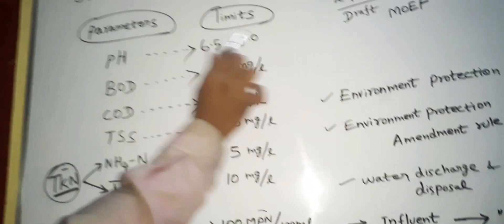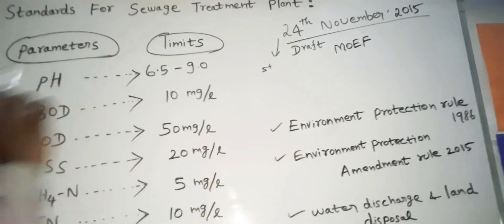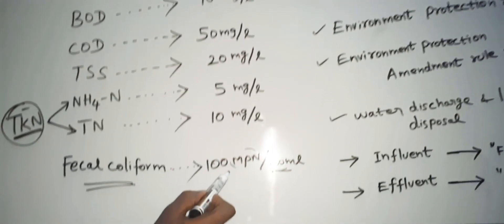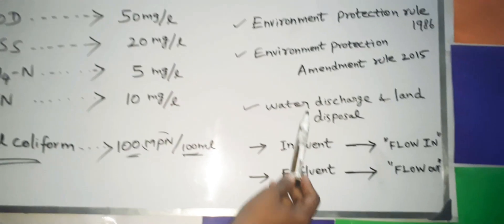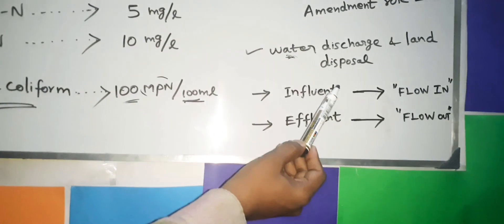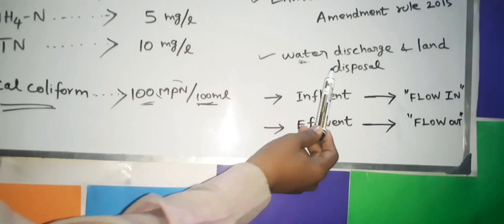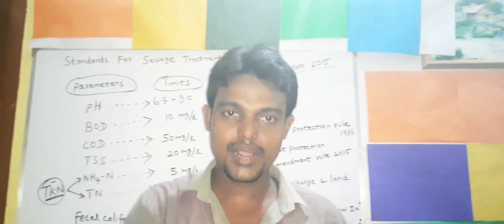So this is the basic STP treatment limit. This limit applies for 5 years from the announced date — 24th November 2015. This applies to all plants: ETP, STP, and industry treatment. This is under the Environmental Protection Rule 1986, amended in 2015. This covers water discharge, plant effluent discharge, land discharge, and land disposal.